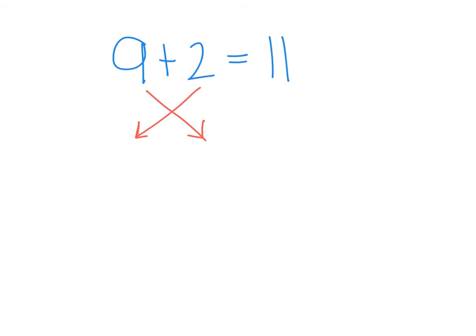The 2 now becomes the first number. We still have our plus sign. The 9 becomes the second number. And the sum will stay the same. The sum will not change just because the order of the addends have.